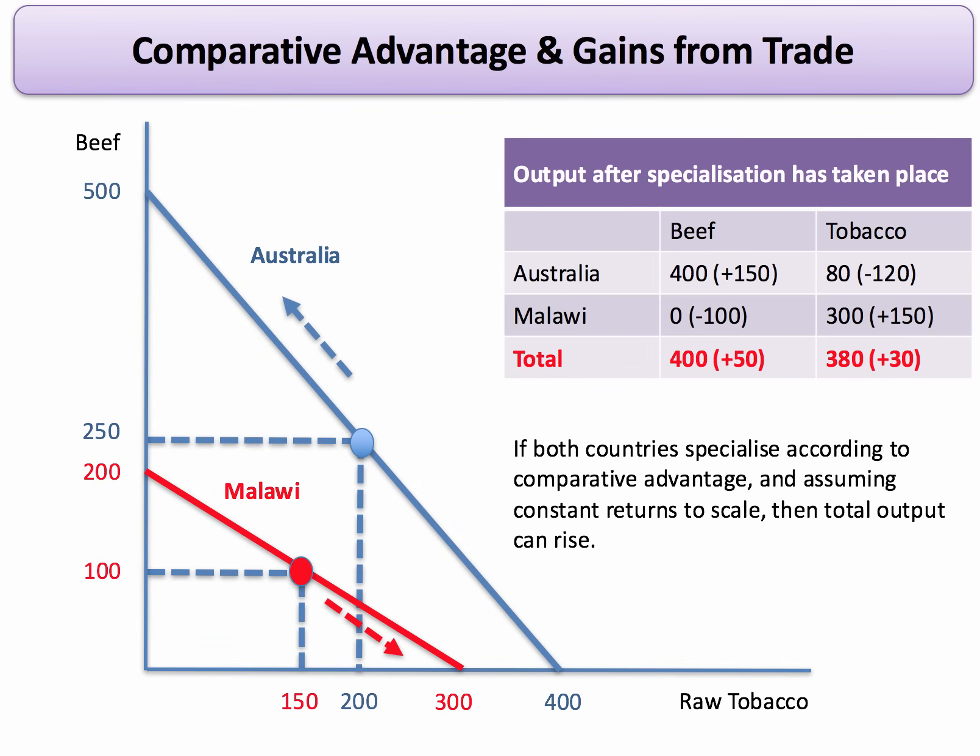Malawi fully specialises and produces 300 units of tobacco. Australia partly specialises, sacrificing 120 units of tobacco to gain 150 units of beef. So total output of beef goes up to 400 and total output of tobacco rises to 380.